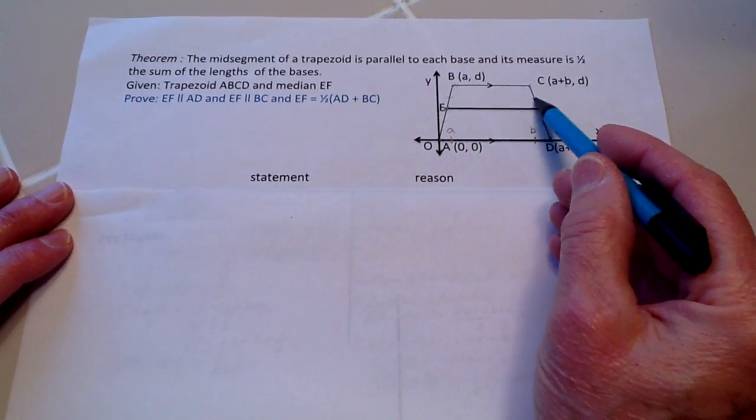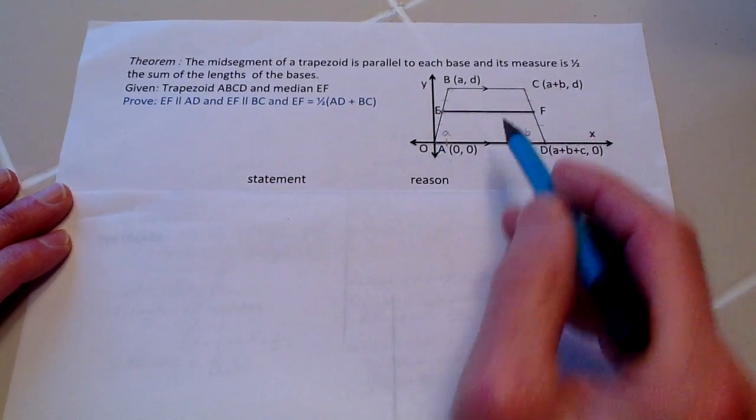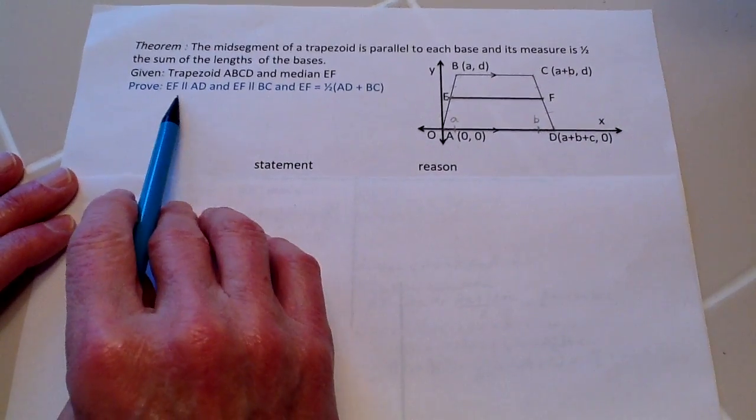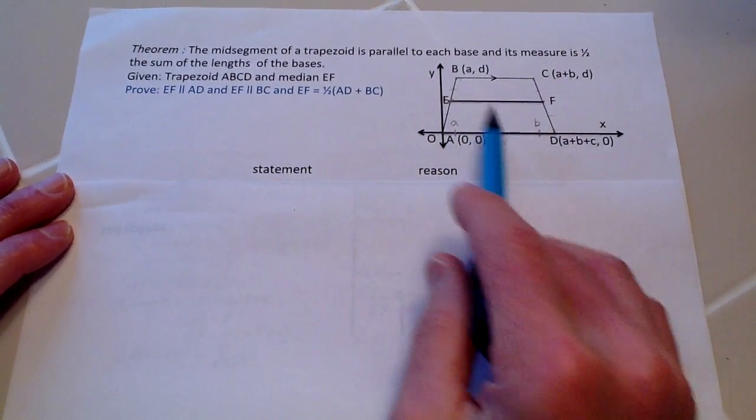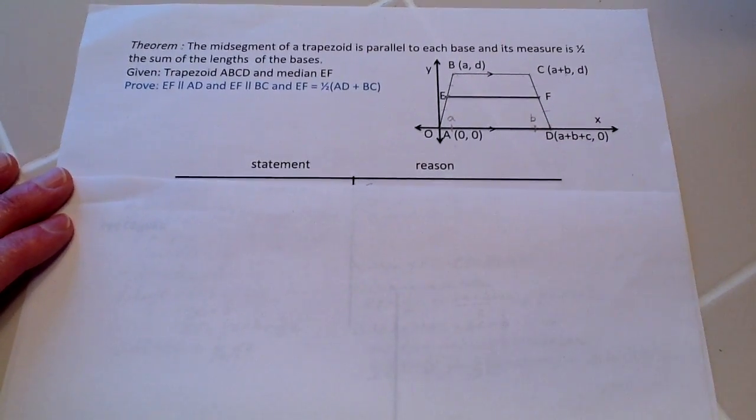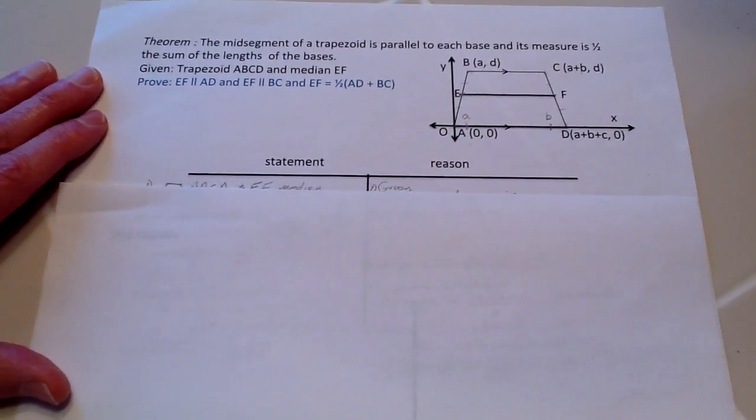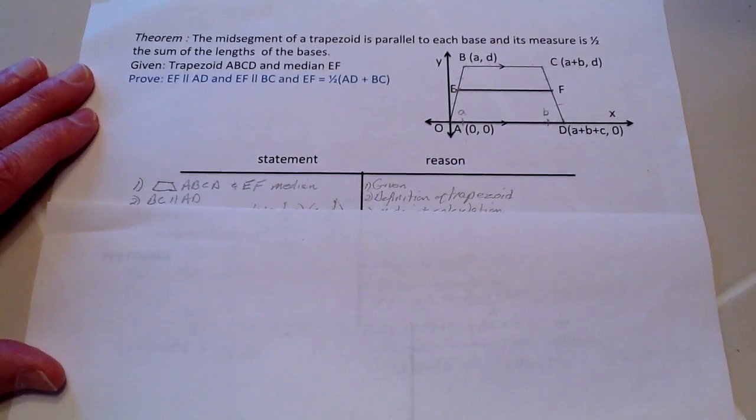So we have our given and the median, which means that these two parts right here are equal to each other, since the median means it has been split. And we're going to prove that EF is going to be parallel to AD and EF is going to be parallel to BC, and that the median is one-half the sum of the bases.